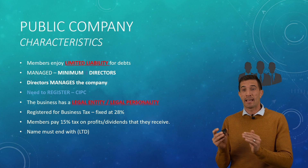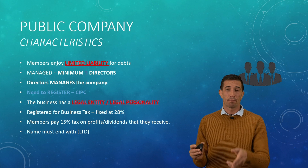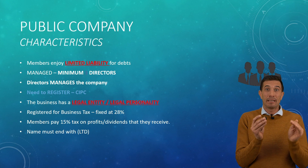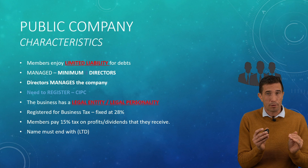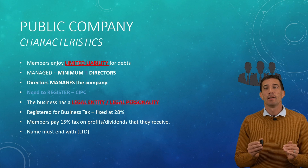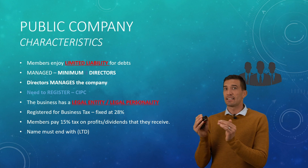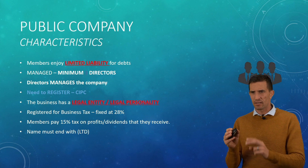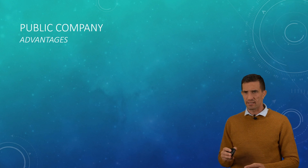Here's how we recognise if it's a public company: it ends with the name LTD. Remember, with a private company it ended with the letters PTY — proprietary — but here it's just LTD. So make sure you see those small differences.